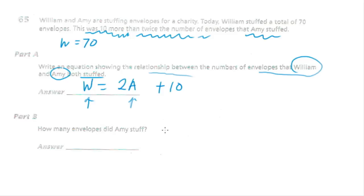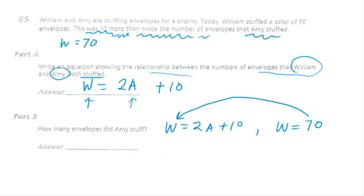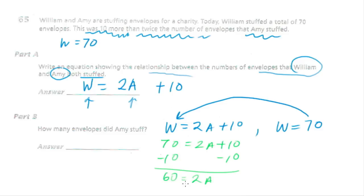For part B, how many did Amy do? We know W = 2A + 10 and W = 70, so substitute: 70 = 2A + 10. Subtract 10 from both sides: 60 = 2A. Divide both sides by 2: A = 30. Amy stuffed 30 envelopes.